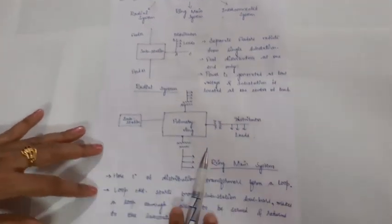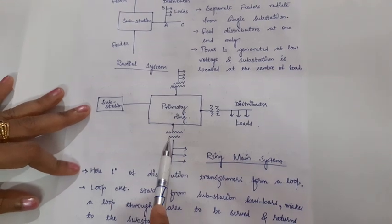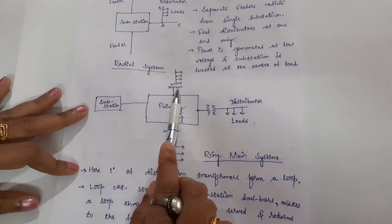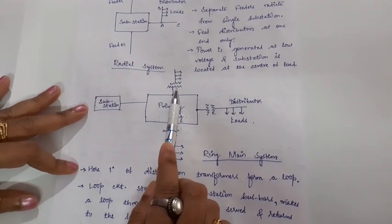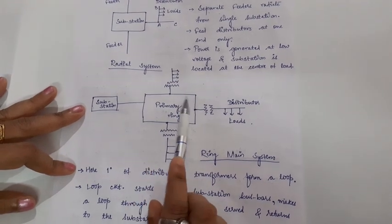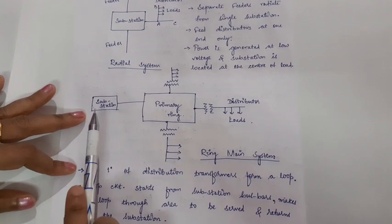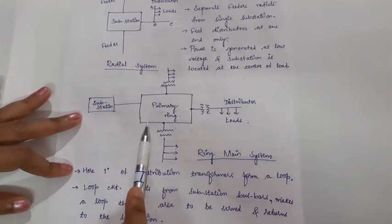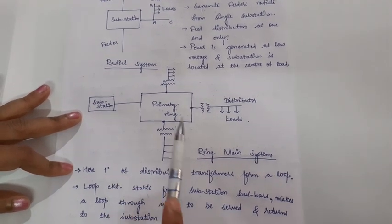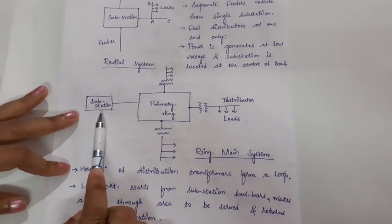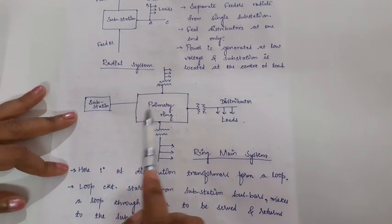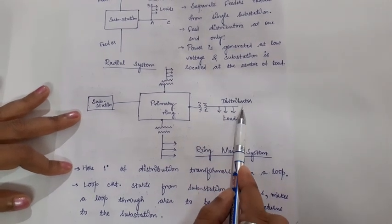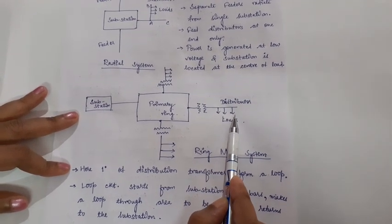In the ring main system, the primary of the distribution transformers forms a loop called the primary ring. The loop circuit starts from the substation, takes into account the substation busbars, makes a loop through the area to be served, and returns back to the substation. From the primary ring, the primaries of distribution transformers are connected. These are step-down transformers. From the distribution transformer, the distributor is connected, and from the distributor, tappings are taken as service mains connected to consumer loads.